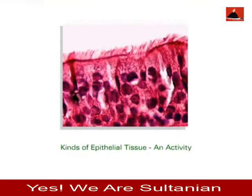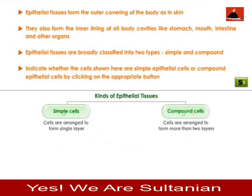Epithelial tissues form the outer covering of the body, as in skin. They also form the inner lining of all body cavities like the stomach, mouth, intestine, and other organs. Epithelial tissues are broadly classified into two types: simple and compound.